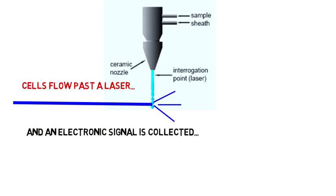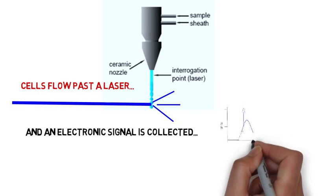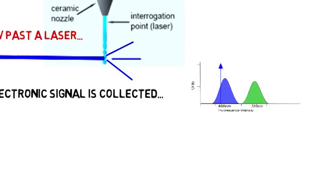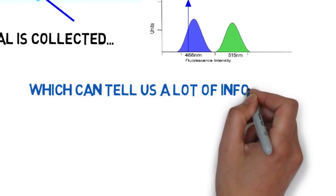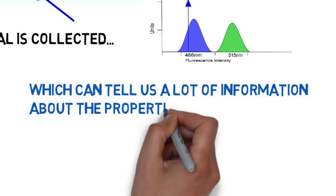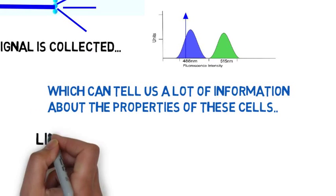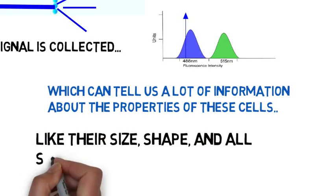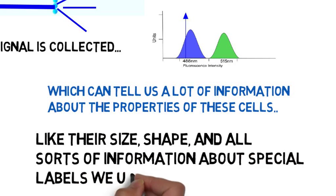And from this, scientists are able to derive a whole lot of information about the size, the shape, and some special properties of the cells if the cells have been labeled with tags called fluorescent labeled antibodies.